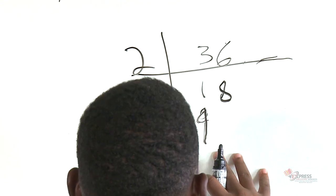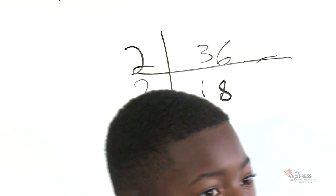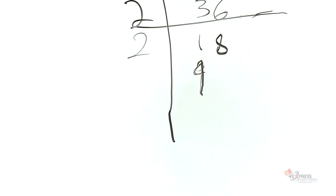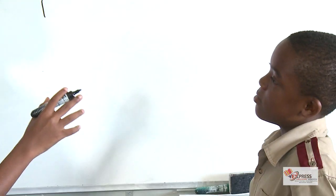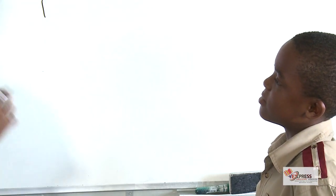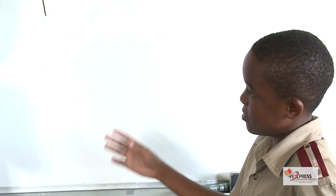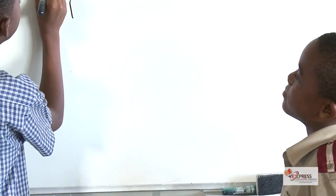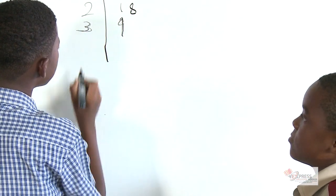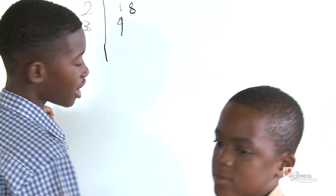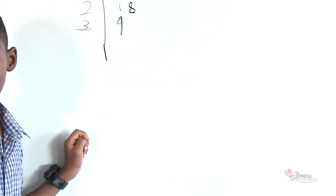Which prime number can go into nine with no remainder? Because there must not be any remainder. Three times three. Which number? Three. Alright, so three goes into nine — three times three.